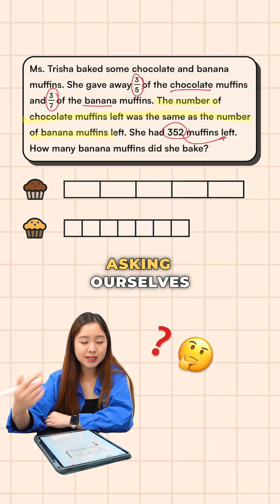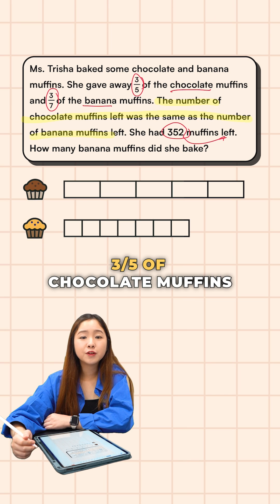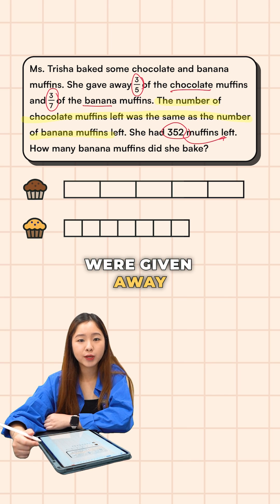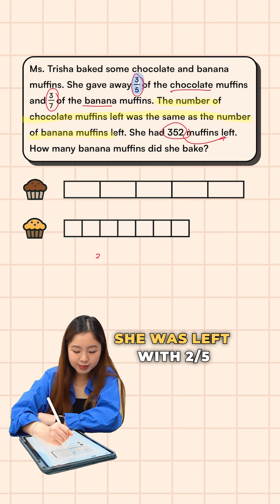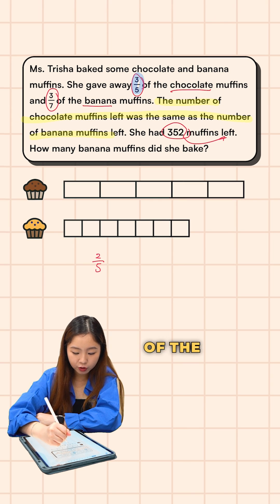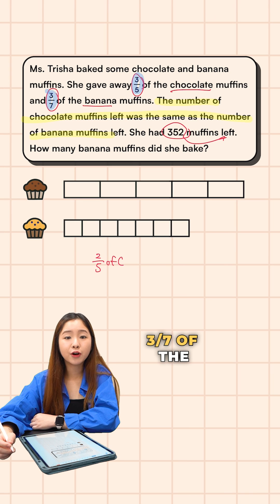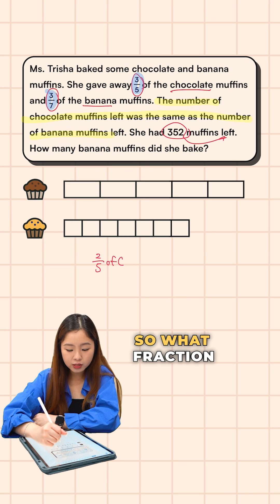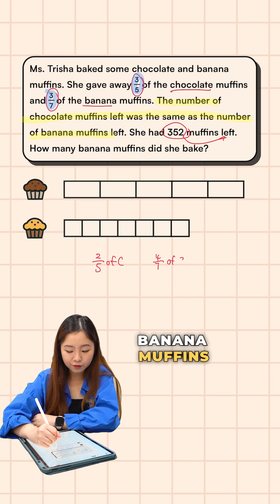Let's start off by asking ourselves what was given away. We know that three-fifths of chocolate muffins were given away, so what fraction of chocolate muffins were left? She was left with two-fifths of the chocolate muffins. At the same time, three-sevenths of the banana muffins were given away, so we will be left with four-sevenths of the banana muffins.